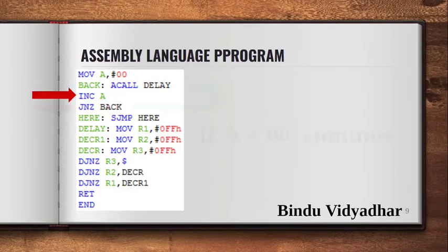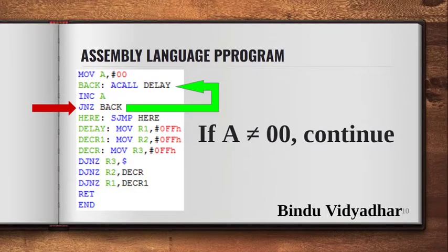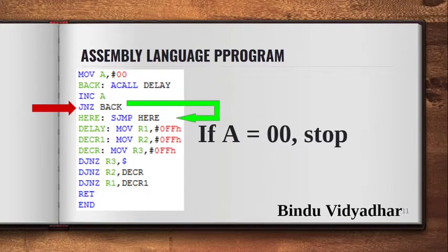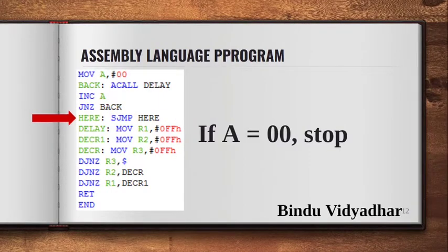If the count in the accumulator is not 0, then the program goes back and continues counting. When the count reaches FF and it is incremented, the number goes back to 00. At this point the program stops.